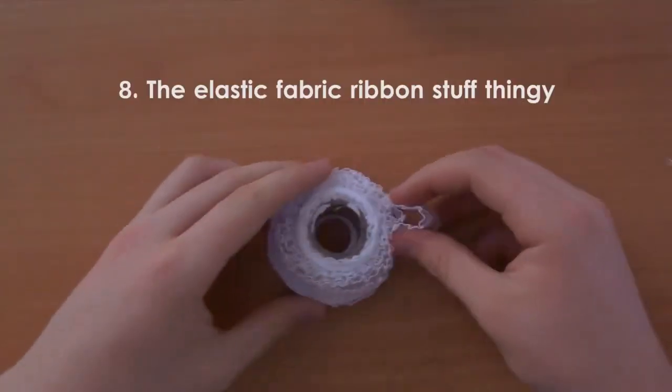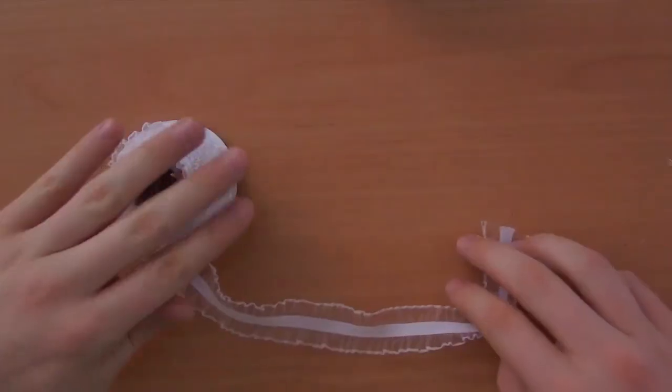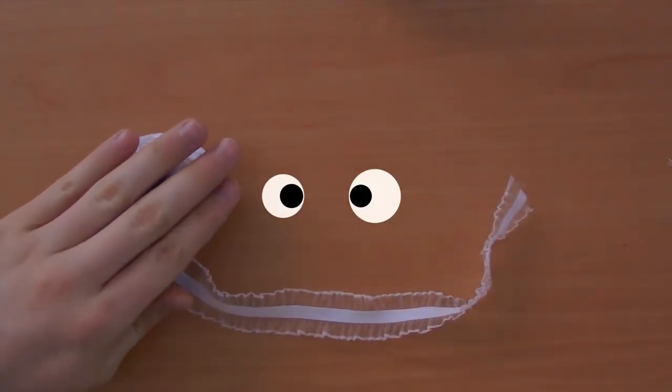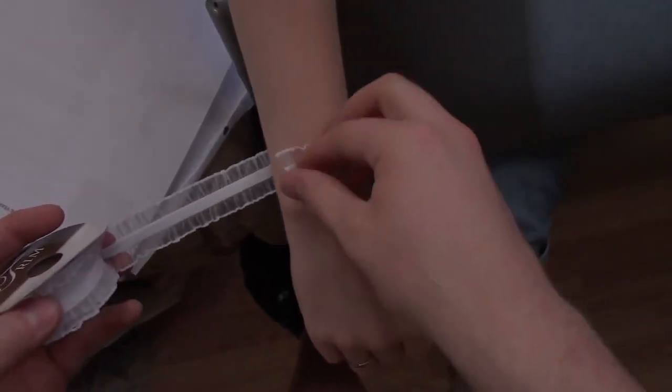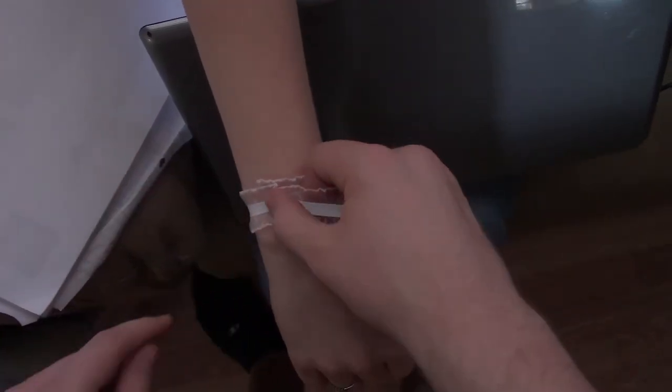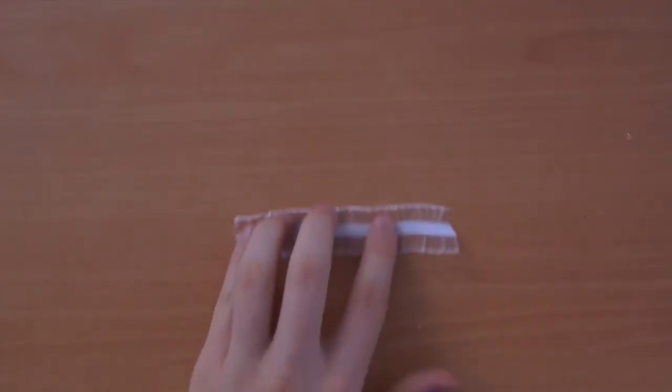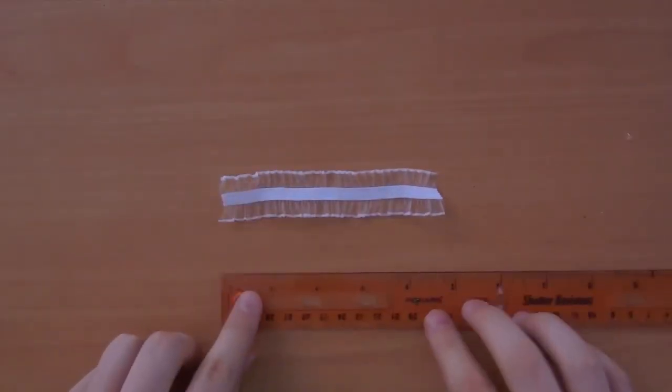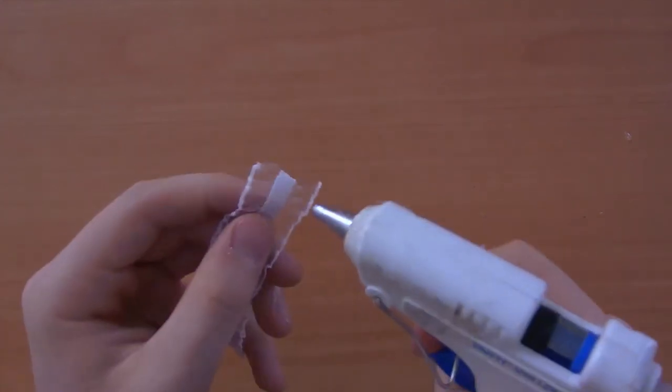This brings us to our last step which involves the elastic fabric ribbon. This is where I went to my sister for help. I took her measurements and approximated it as my prom date. Her measurements turned out to be about five inches long though you're going to have to estimate what your prom date's wrist will be.